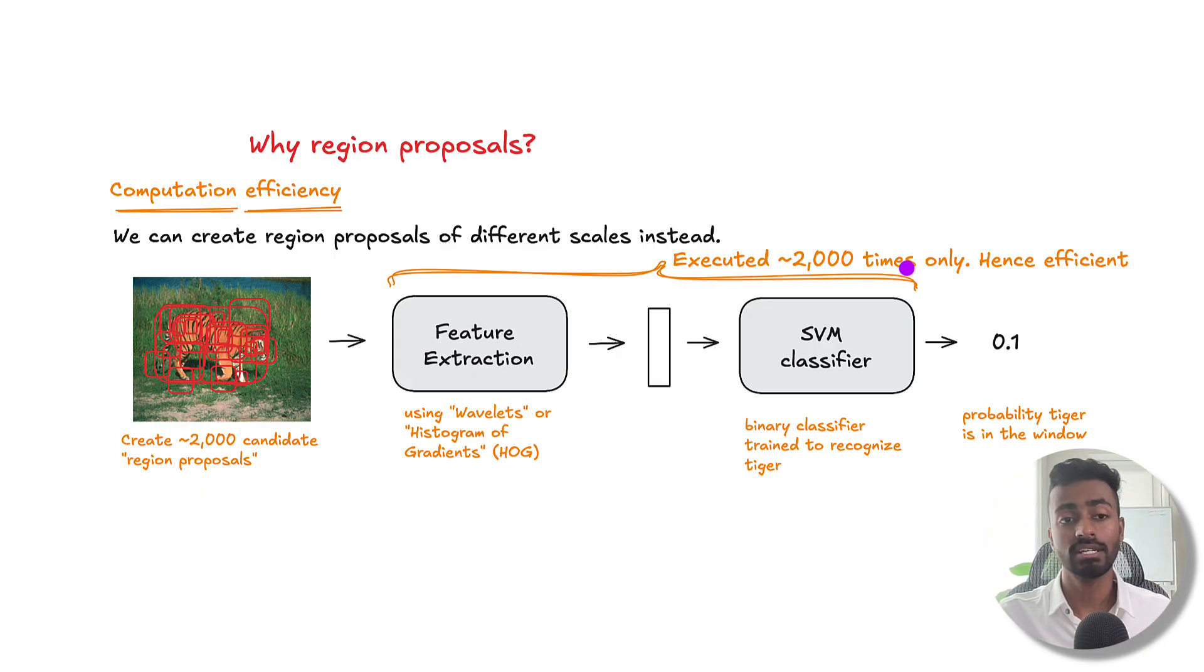And this is especially true as we get into the 2010s where we have much higher quality images in datasets. So we have a larger number of pixels and the sliding window approach just becomes more and more inefficient and expensive.